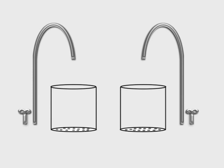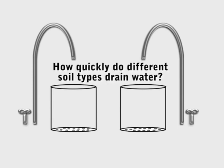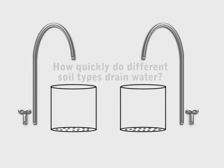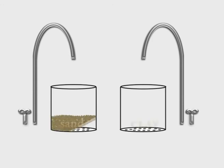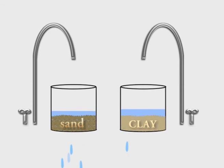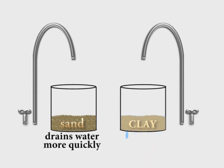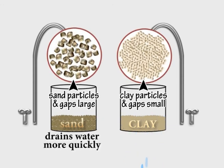You can also carry out experiments to see how well different soil types will drain water. For example, place a fixed amount of sandy soil and clay soil in two containers with some small holes in the bottom. Now pour a fixed volume of water into each container and see how quickly the water drains through. The water goes through the sandy soil more quickly, because the gaps between the particles are bigger than in the clay soil.